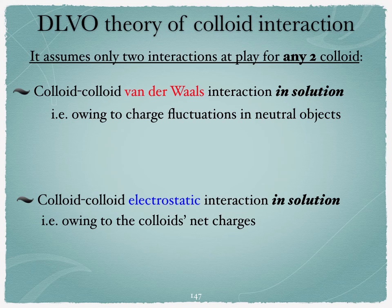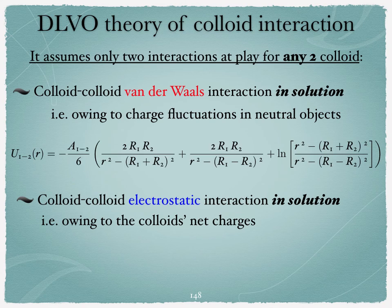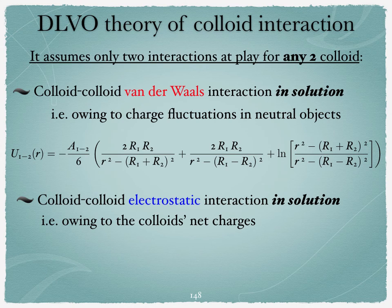The Van der Waals interaction is owing to charge fluctuations in neutral objects which basically comprise the bulk part of the colloids, while the electrostatic interaction is owing to the colloid's net charge which is carried at the surface. The Van der Waals interaction reads with the Hamaker constant A12, which can be either positive or negative depending on the medium in between the two colloids — an improvement by Lifshitz on the initial Hamaker formula.